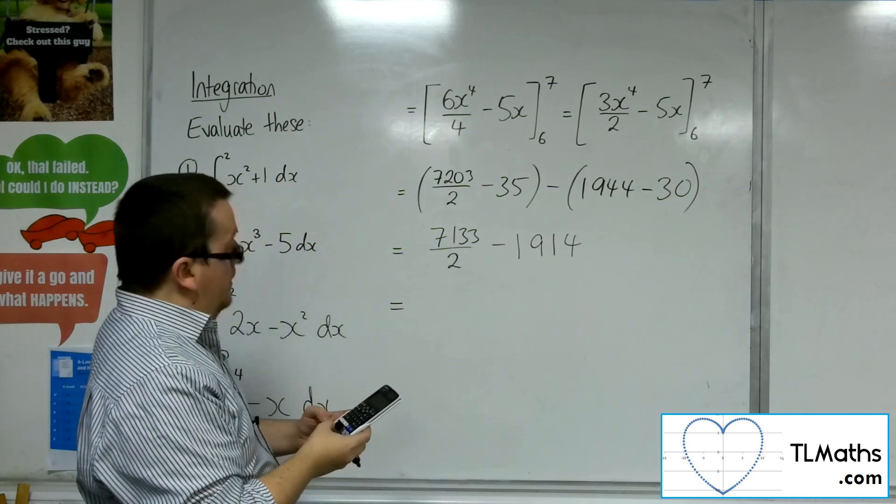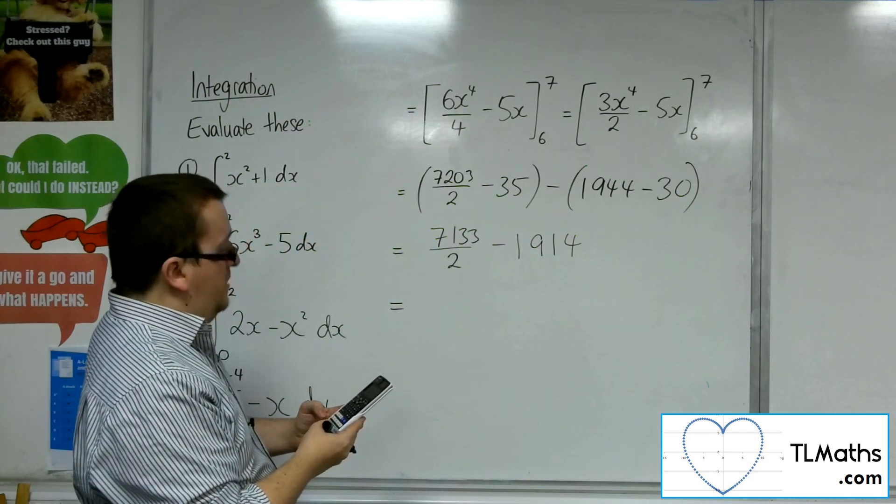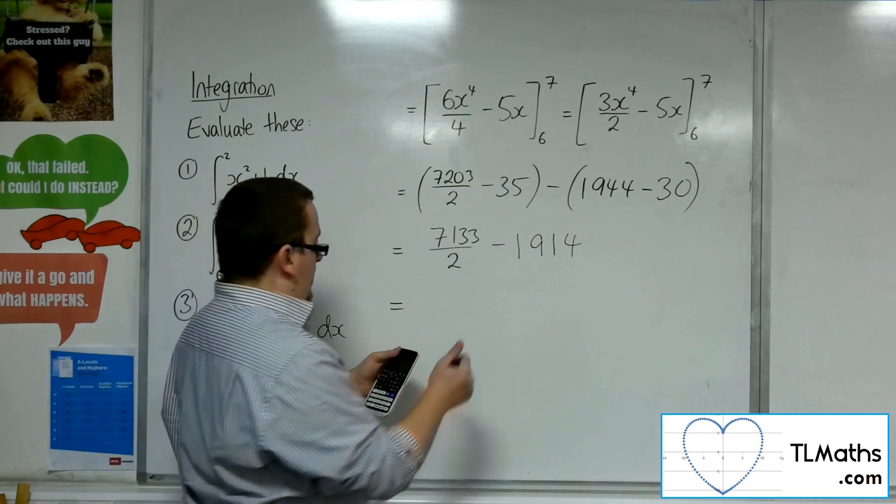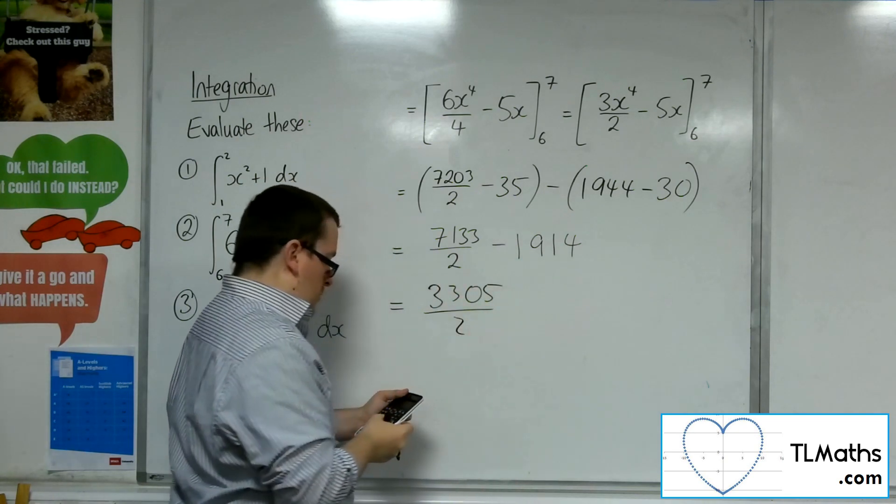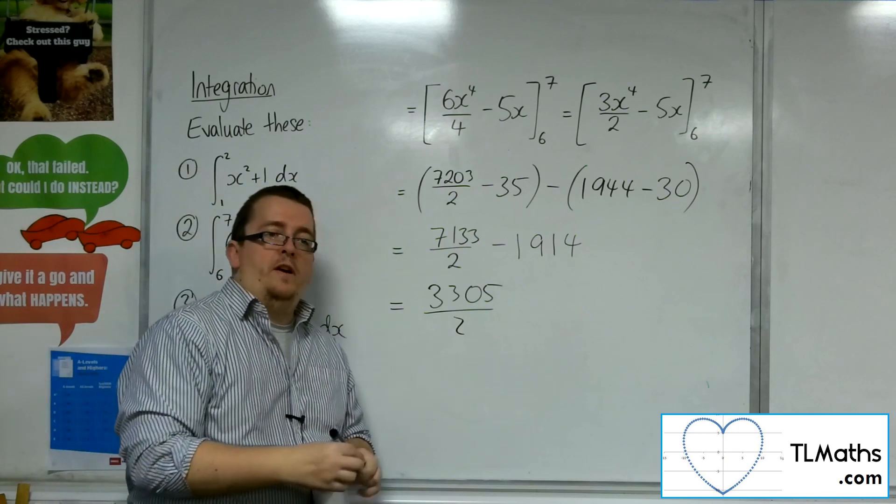So 7,133 divided by 2 take away 1,914 is 3,305 over 2, or 1,652.5.